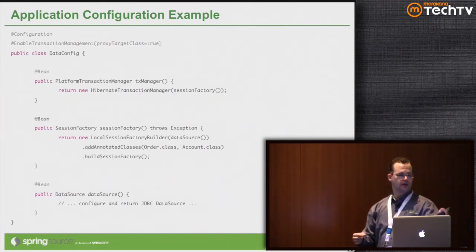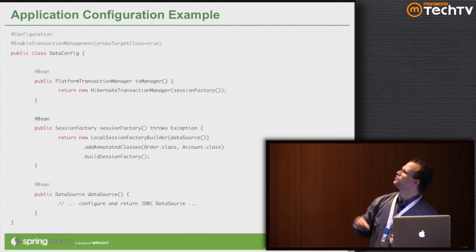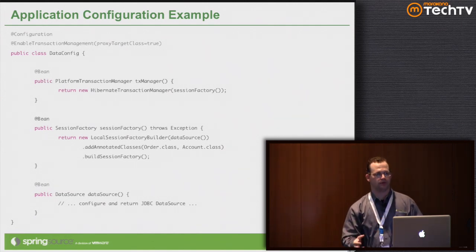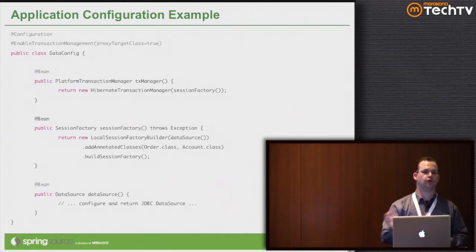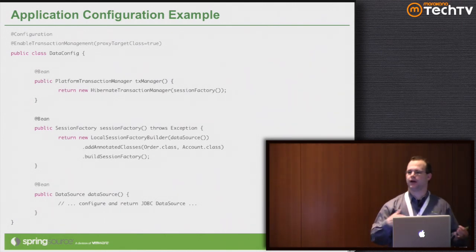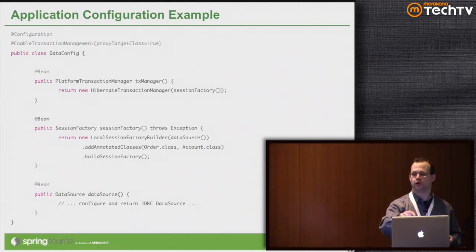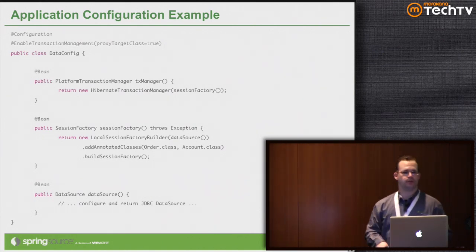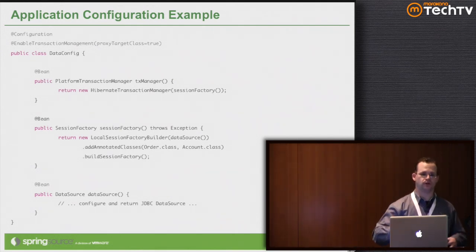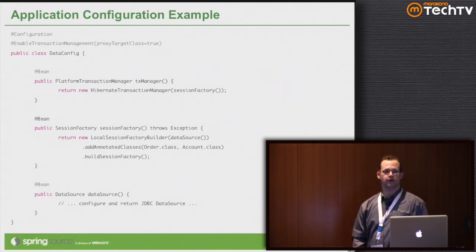In this case, we have @Bean, public PlatformTransactionManager txManager. The ID of the bean is txManager — the name of the method. The type is PlatformTransactionManager, which Spring can determine at runtime from the return value of the method. Because it's just a regular method, you can do whatever you want to set it up — you're no longer beholden to rules like needing a no-argument constructor. You have the full power of the Java language inside these methods.